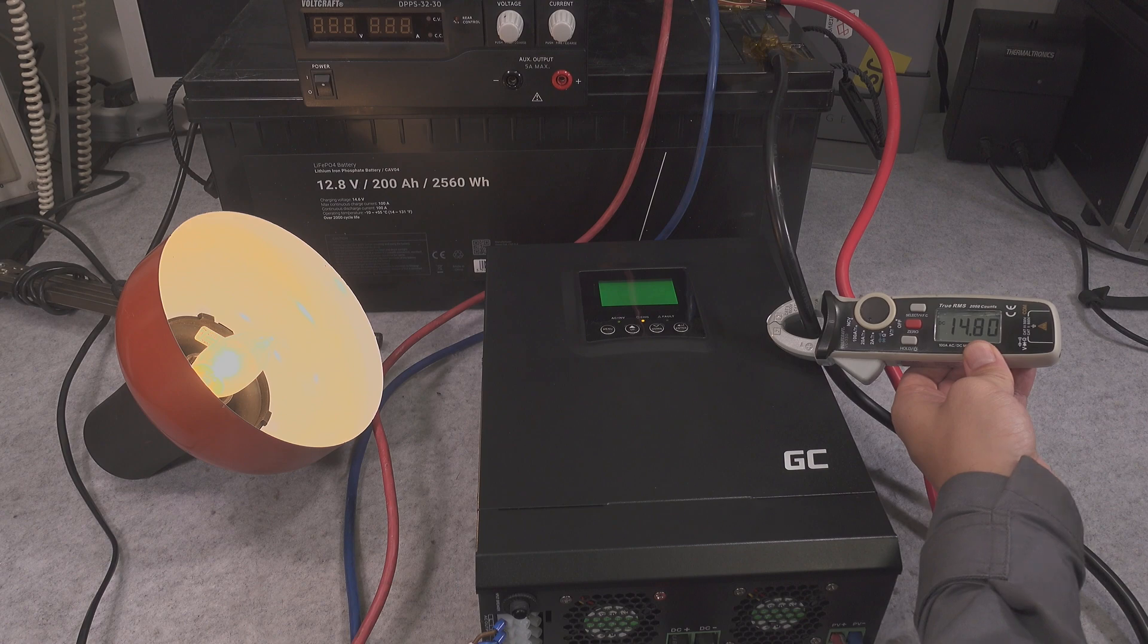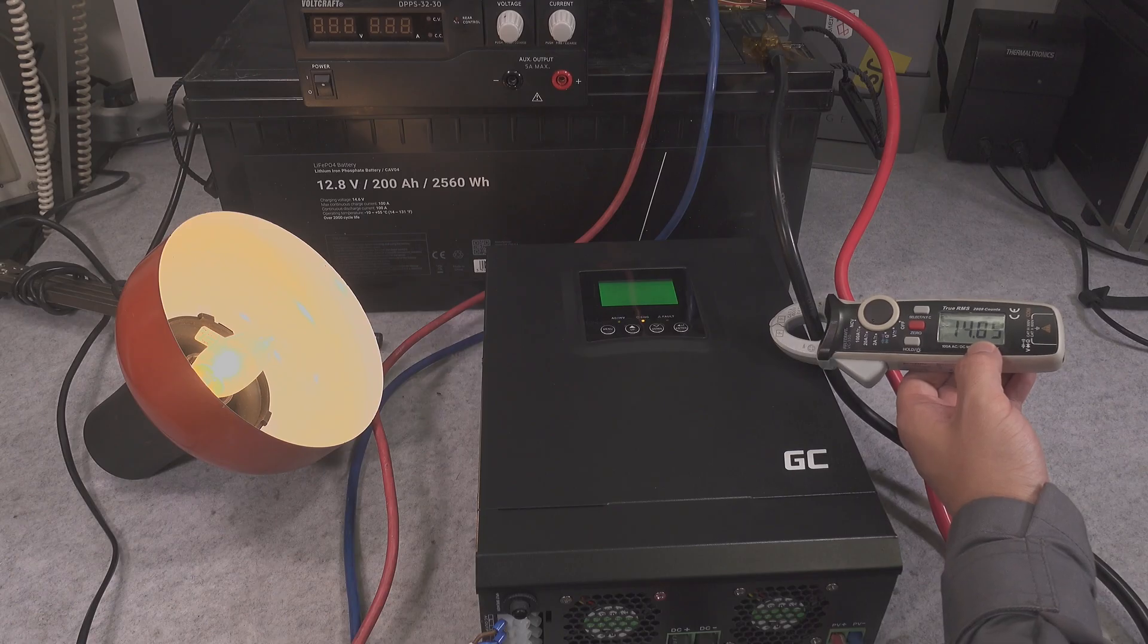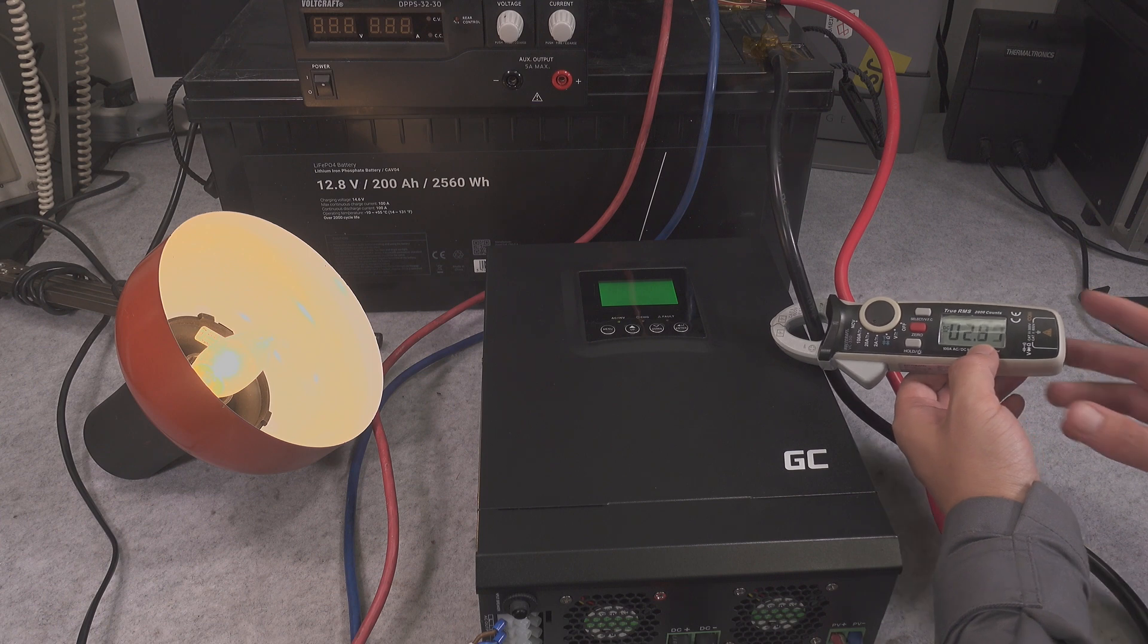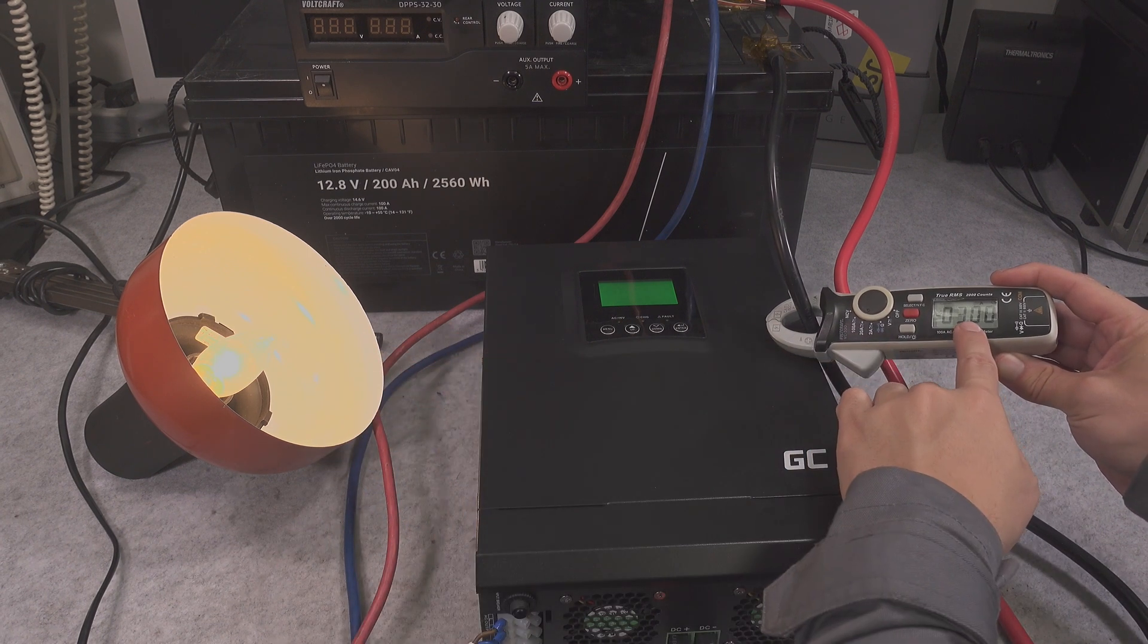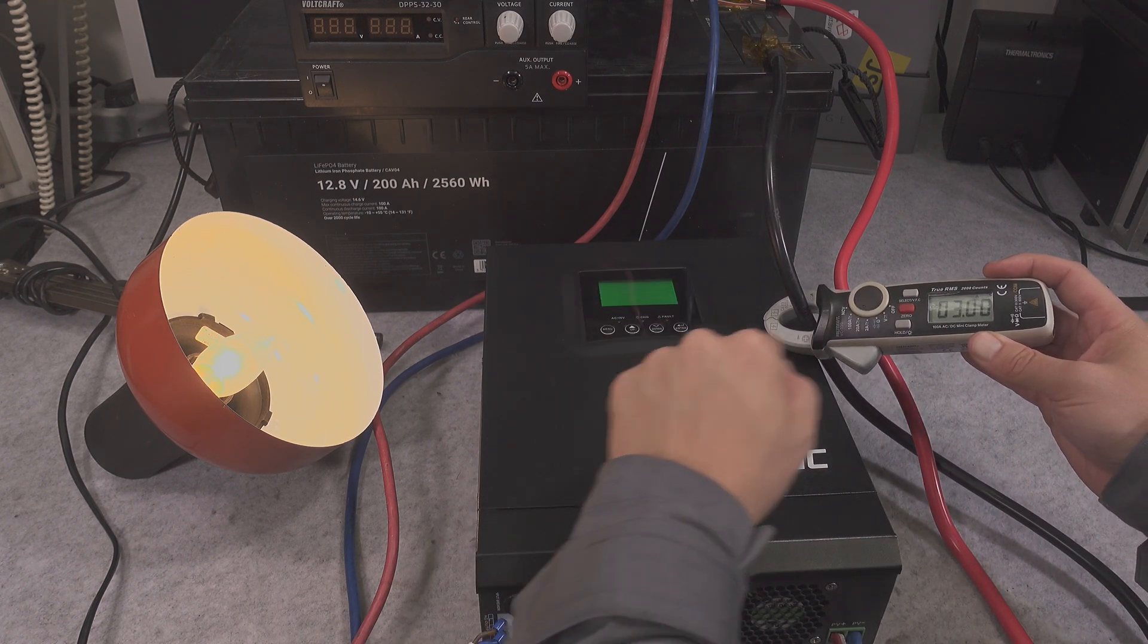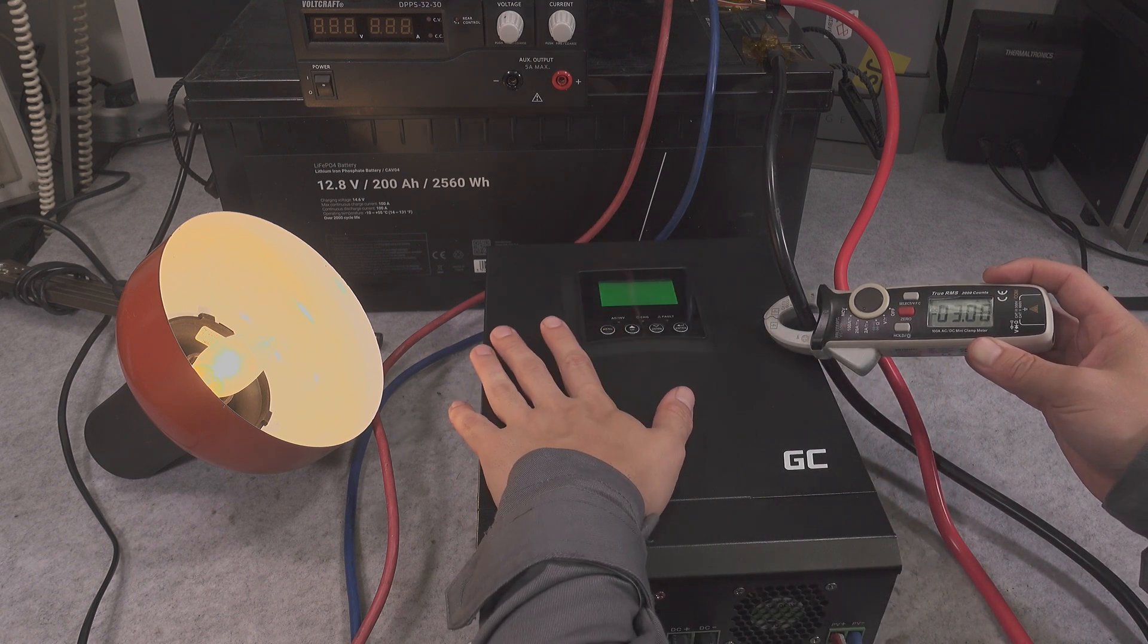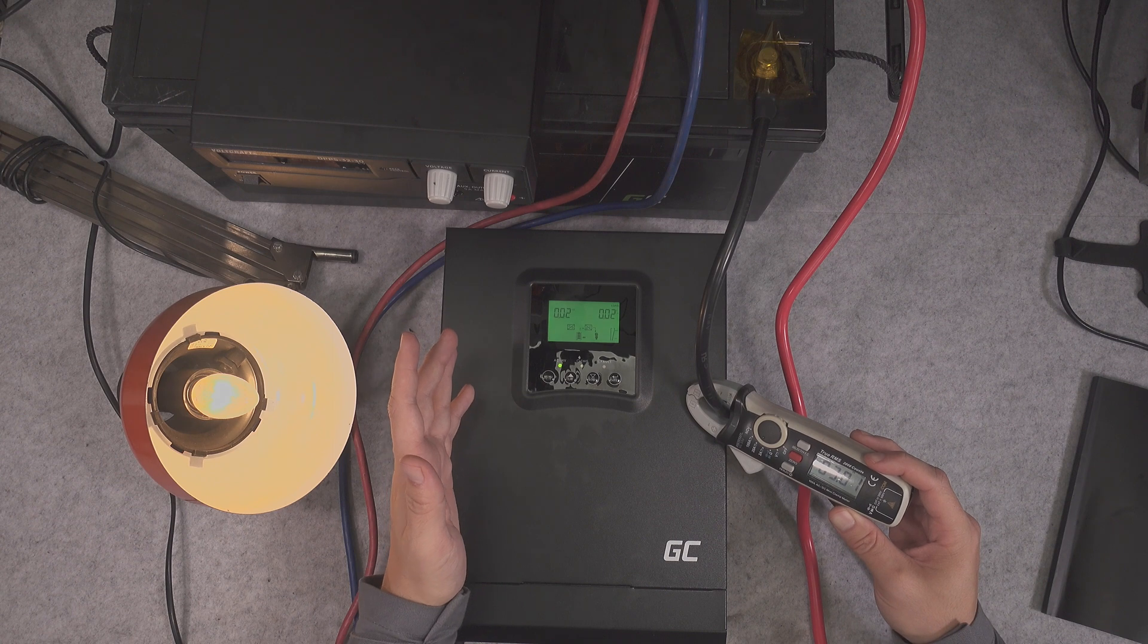Here we are going to be simulating power outage and I will disconnect our grid. There was a tiny blink and now the inverter is working. We are pulling power from battery. In my use case, in that condition where the battery is going to be low, we are going to be starting our gas generator.